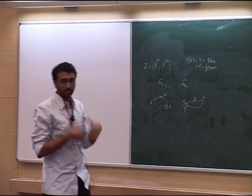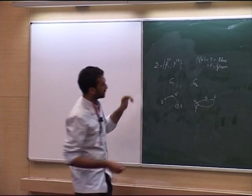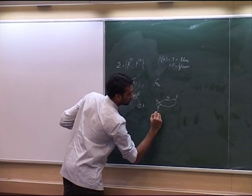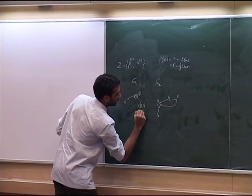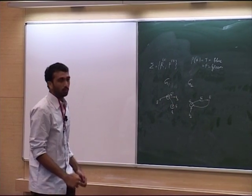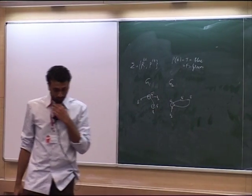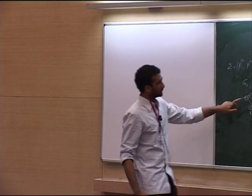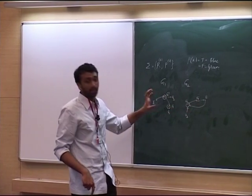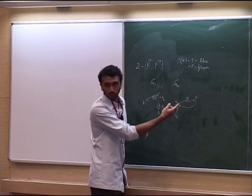The game proceeds to the next round. The spoiler again has freedom to choose any one of the structures and pick a node. Say the spoiler picks node A2 from the second structure G2. The duplicator is supposed to choose the other structure and pick a node which has the same color as A2, but also bears the same kind of relationship to the previously selected nodes as A2 does. So the duplicator has no real choice here — he must pick the corresponding node.